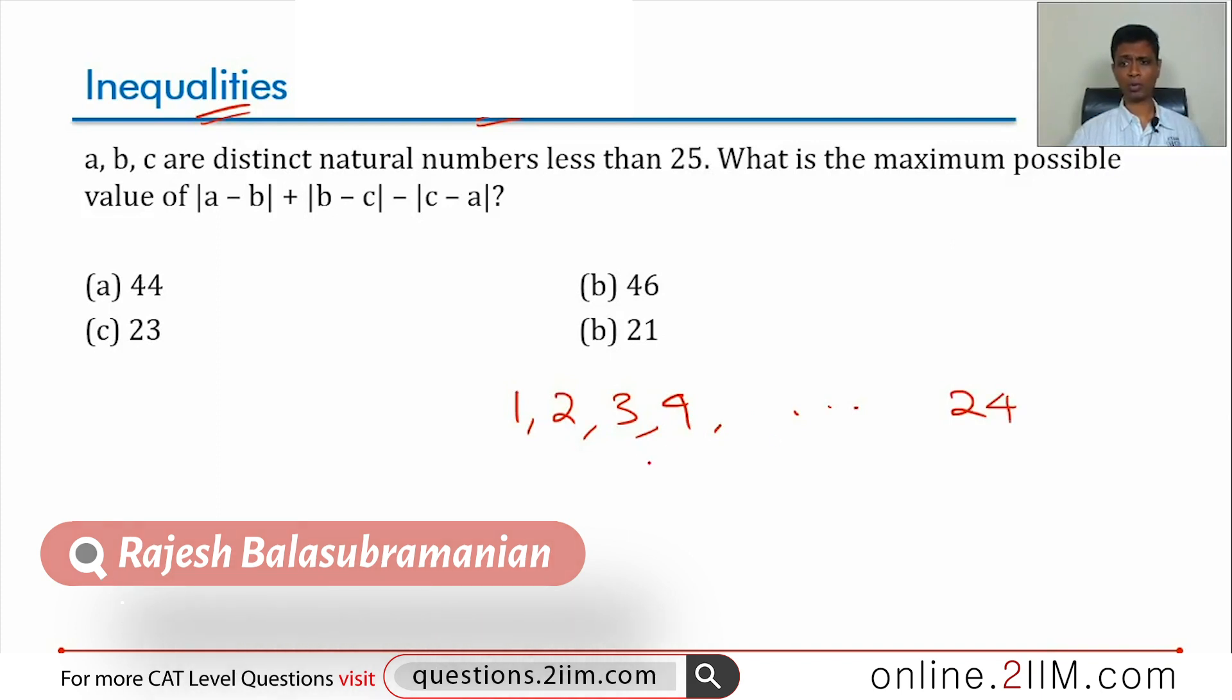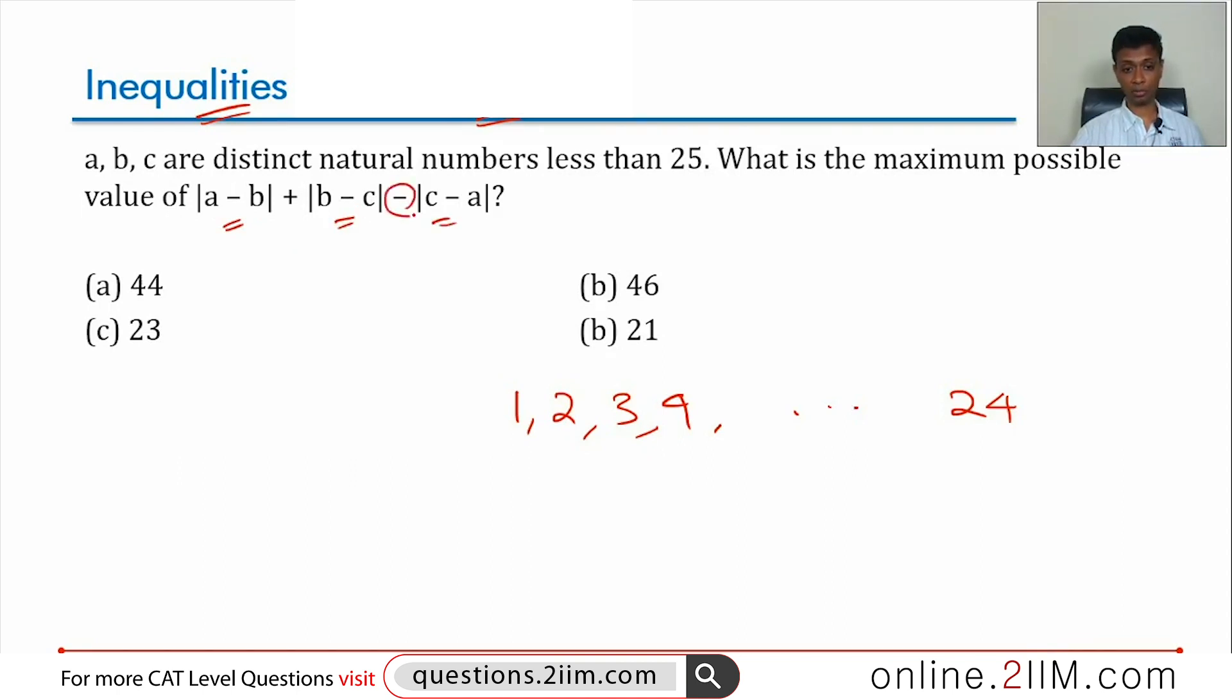What is the maximum possible value of modulus of A minus B plus modulus of B minus C minus modulus of C minus A. Remember this is minus not all plus. What is the maximum possible value of this.